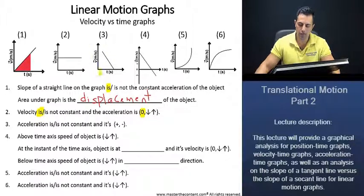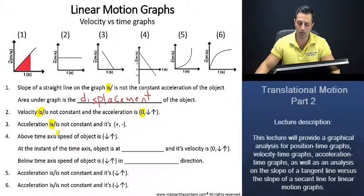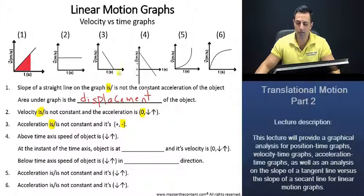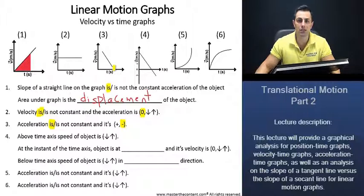For the third graph: acceleration here is constant because we have a straight line. And it's negative — the acceleration is going to be negative because the velocity is decreasing. When the velocity is decreasing, the acceleration is negative.